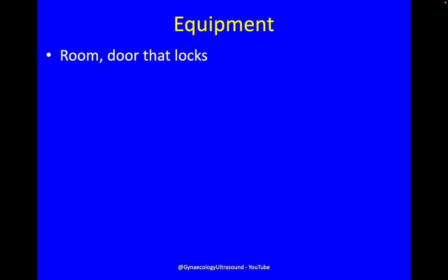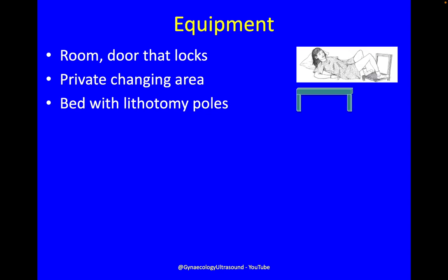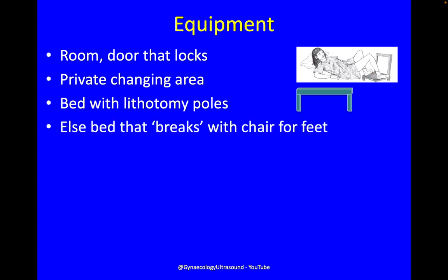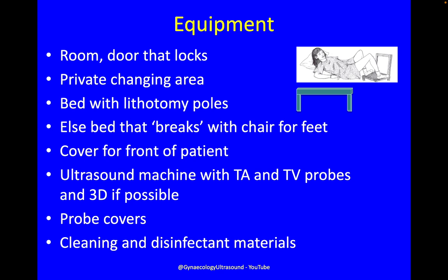The equipment: a room with a door that locks so people feel private, a changing area, a bed with lithotomy poles or a bed that breaks with a chair. Lithotomy poles make life slightly easier. You need a cover for the front of the patient, an ultrasound machine with transabdominal and transvaginal probes and 3D if possible, probe covers without latex, and cleaning and disinfectant materials.